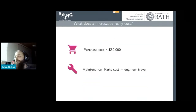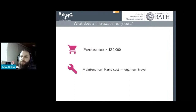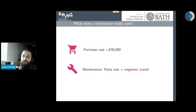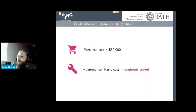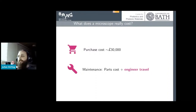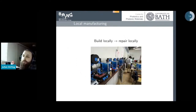People often ask how much it really costs to produce a microscope. A microscope might be 30 grand, and if you need one in every clinic, that gets expensive — but not as expensive as keeping them running long-term with parts and, most importantly, engineer travel. We're talking about malaria diagnosis in sub-Saharan Africa, where there are often no company engineers in the country or even on the continent. You end up paying for international travel every time you want to fix a single thing, and that adds up to more than the initial cost of the microscope. The OpenFlexure project has been built around the ethos: if it can be built locally, it can be repaired locally.